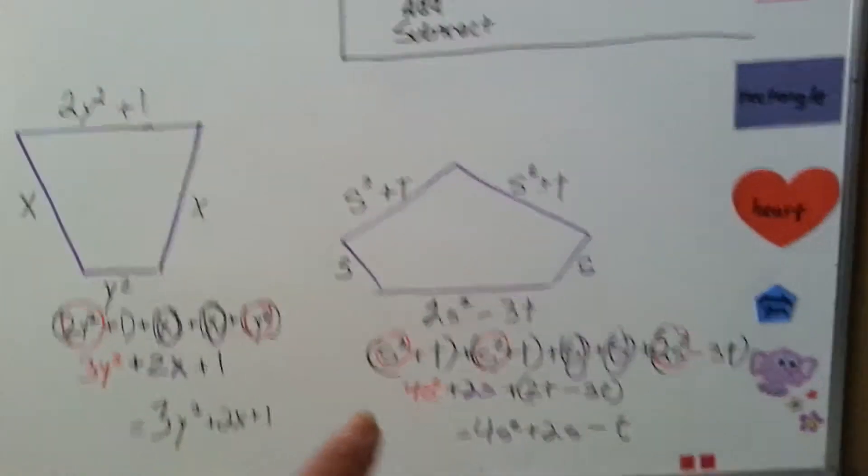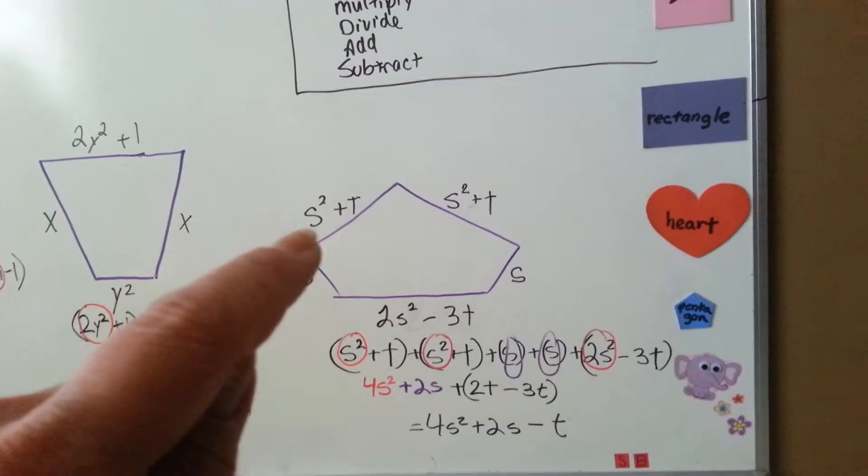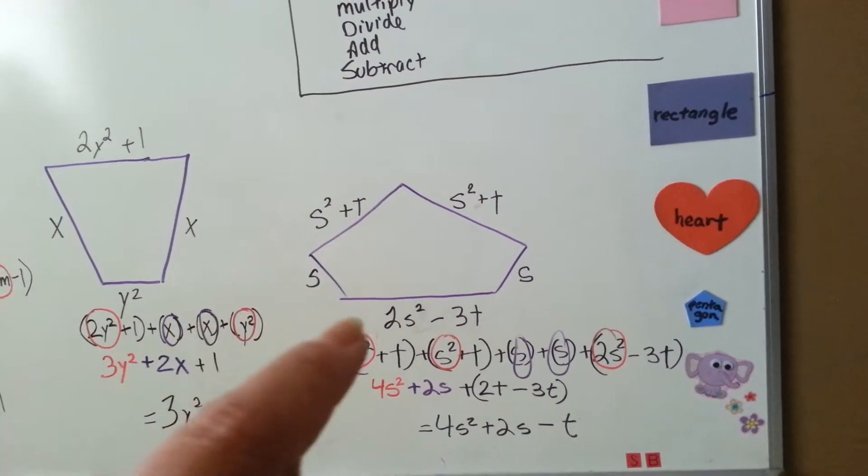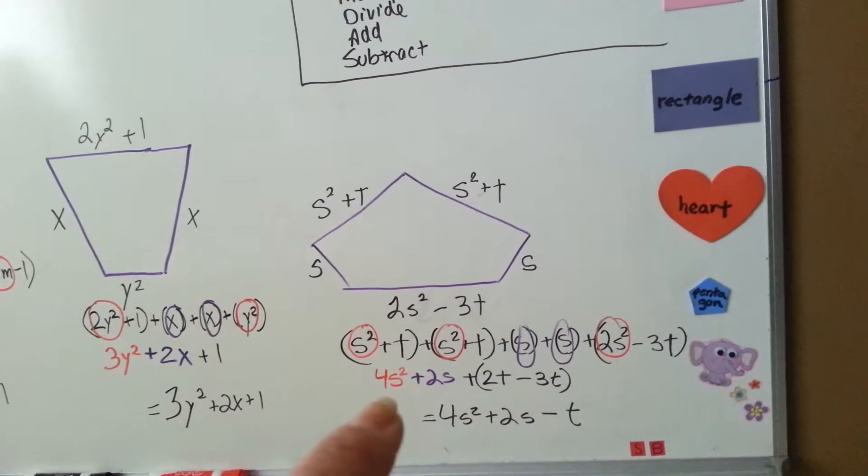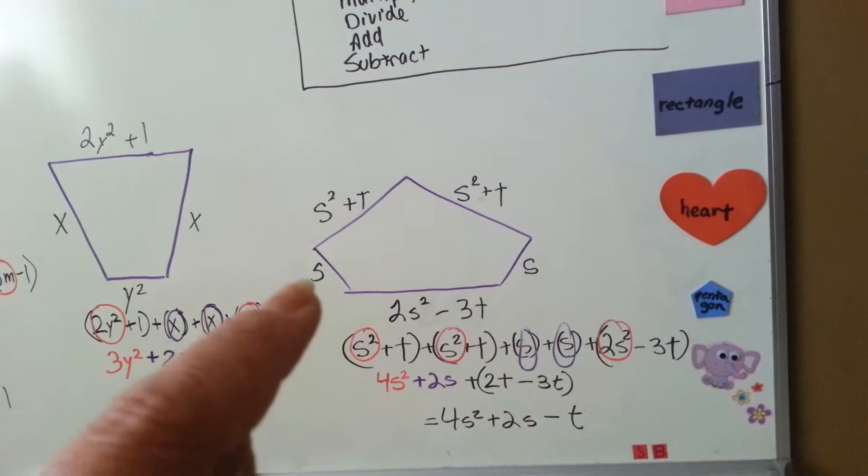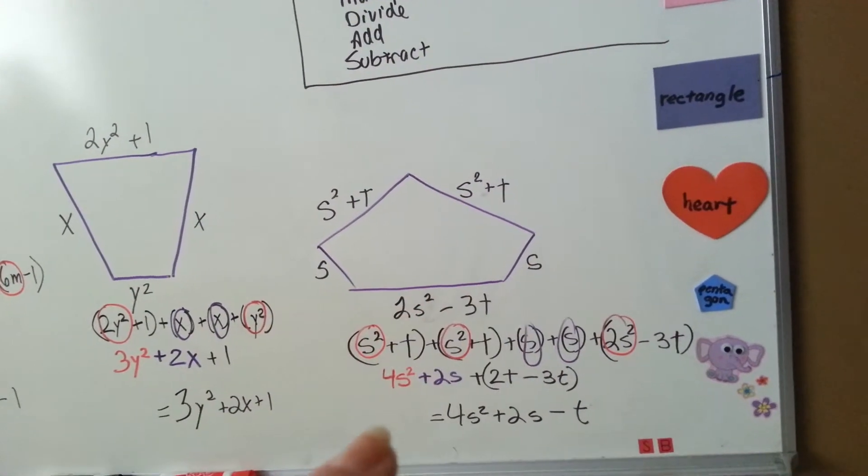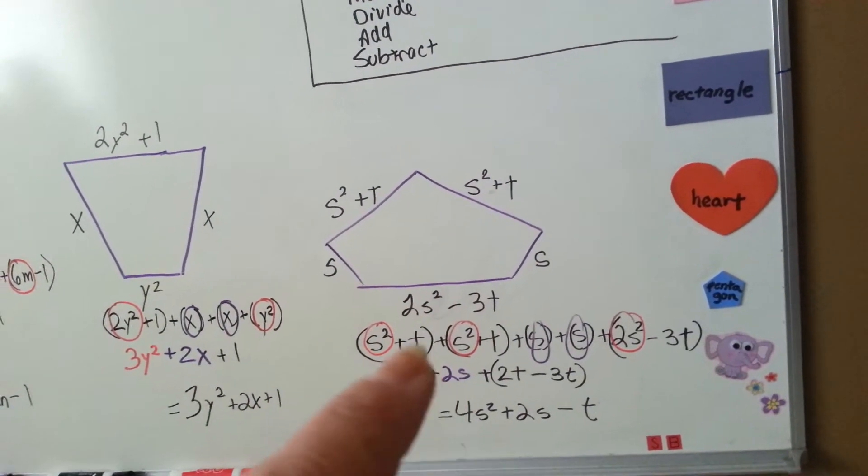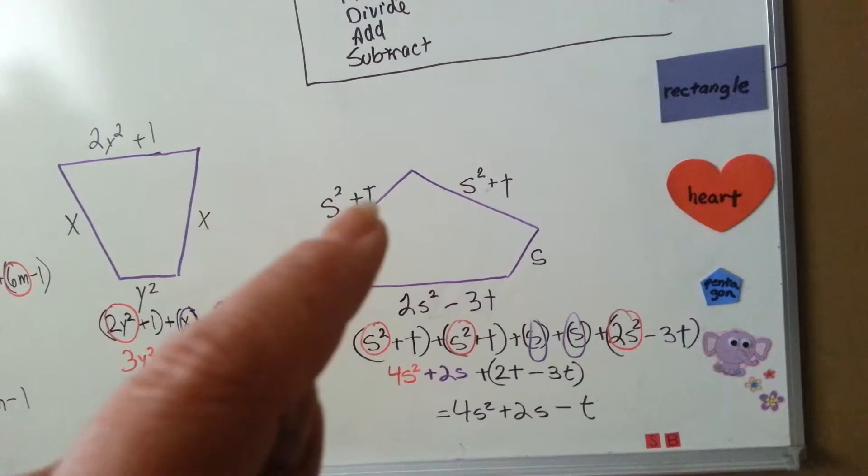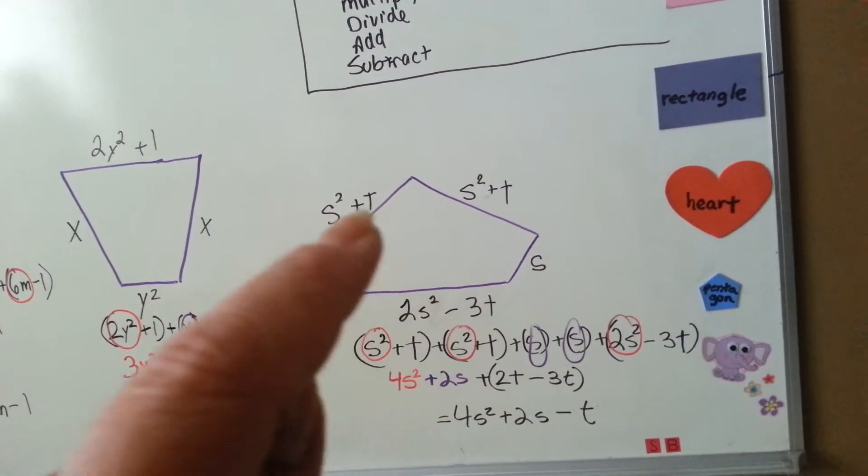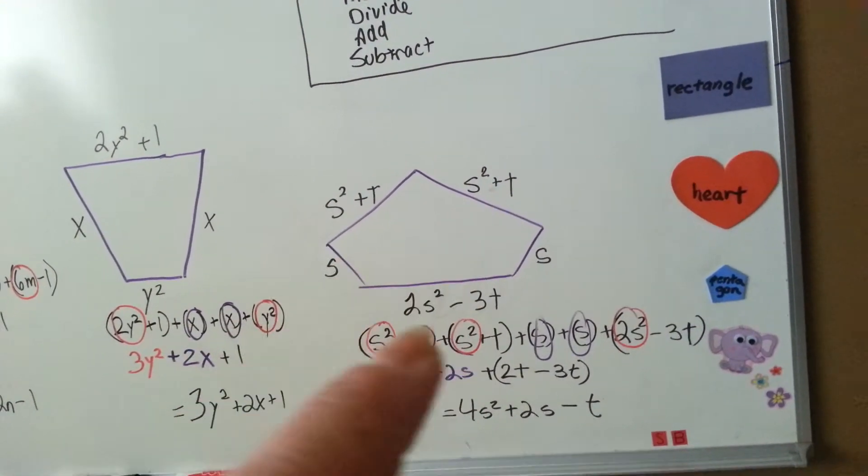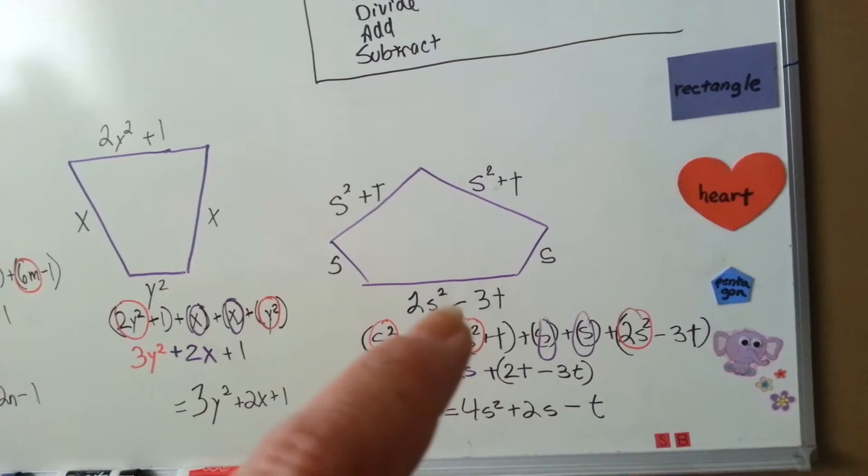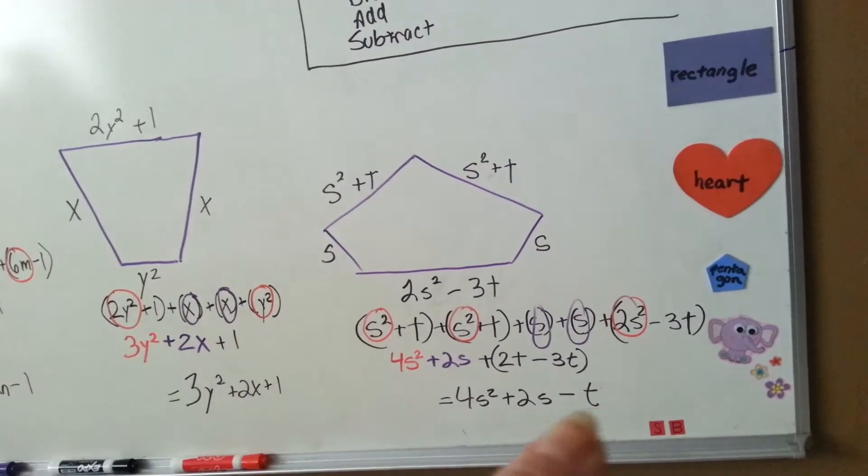Let's look at this one. We're going to combine this s squared with this 2s squared and get 4s squared. We're going to combine this s with this s to get 2s, and then we've got this t and this t together makes 2t. But we want to take away 3t, so that's going to make us negative 1t.